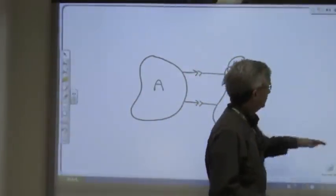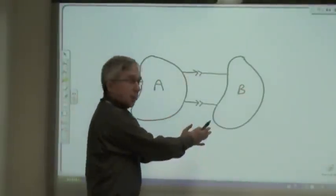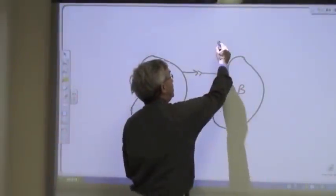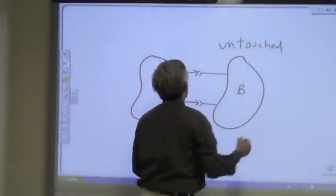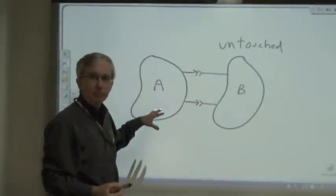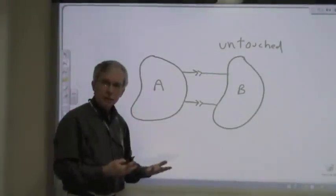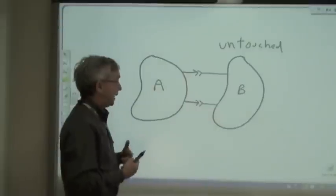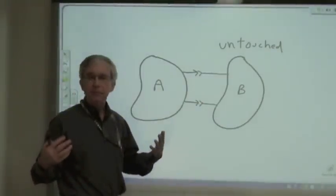Let's begin this discussion by looking at a circuit that we've divided into two parts. We have a circuit divided into part A and part B, and we're going to leave part B untouched. We want to simplify part A. Let's say that part A has at least one independent source — perhaps many sources, many resistors, and any number of linear components.